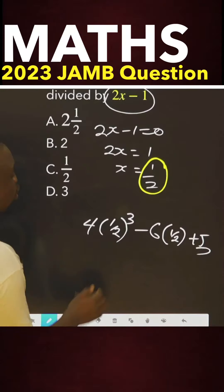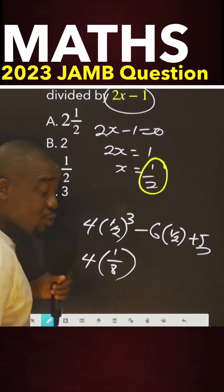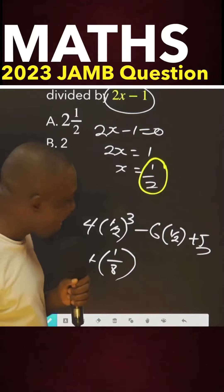What are you going to get from here? You remember, you agree with me that this is 1 over 8. 1 raised to power 3 is 1, 2 raised to power 3 is 8.